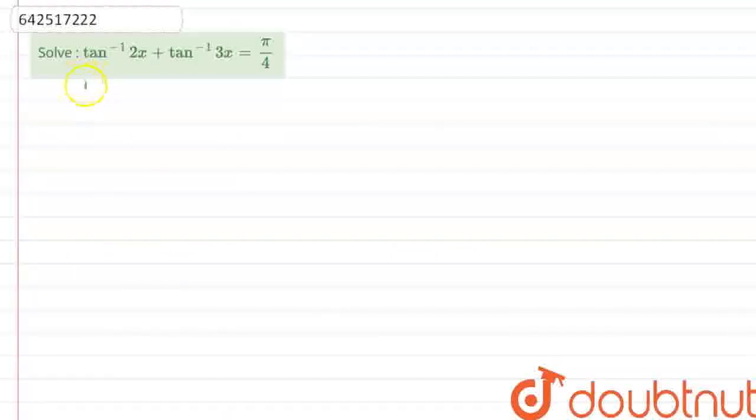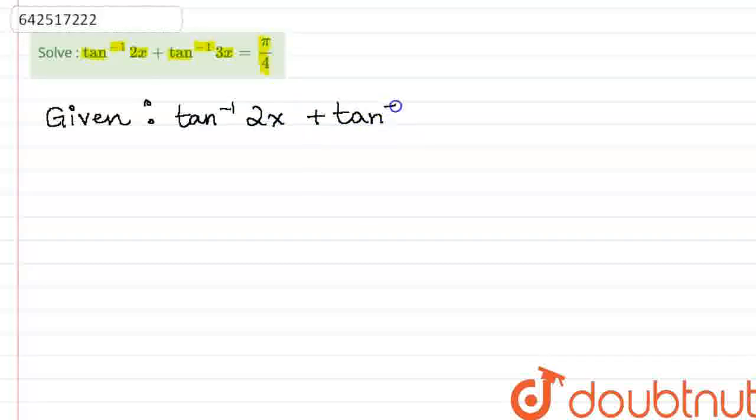Hello everyone, let's start the question. The question says, solve tan inverse of 2x plus tan inverse of 3x is equal to pi by 4. We are supposed to find the value of x.